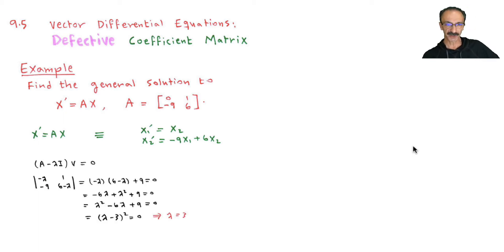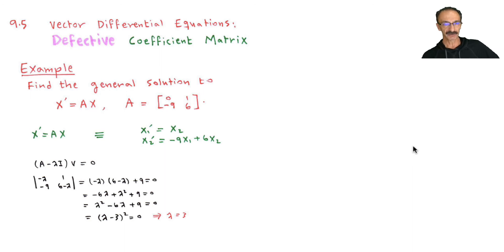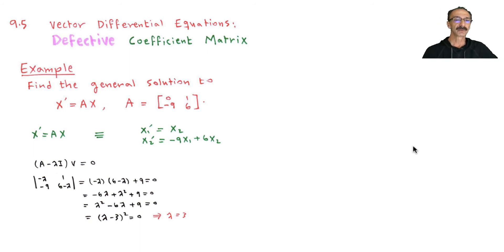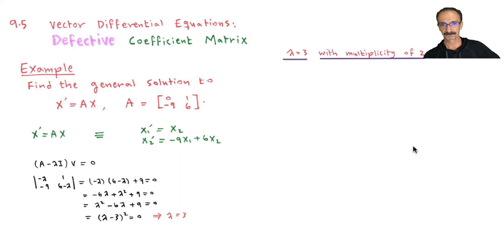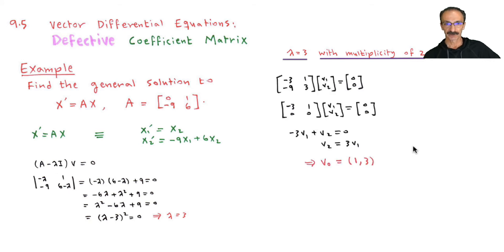Skipping the algebra steps to save time, but you can pause and verify yourself. Solving for lambda, I got lambda equals 3 — we take it back into A and solve for the eigenvectors. Note that this lambda 3 is repeated twice, multiplicity 2. I got the eigenvector [1, 3].